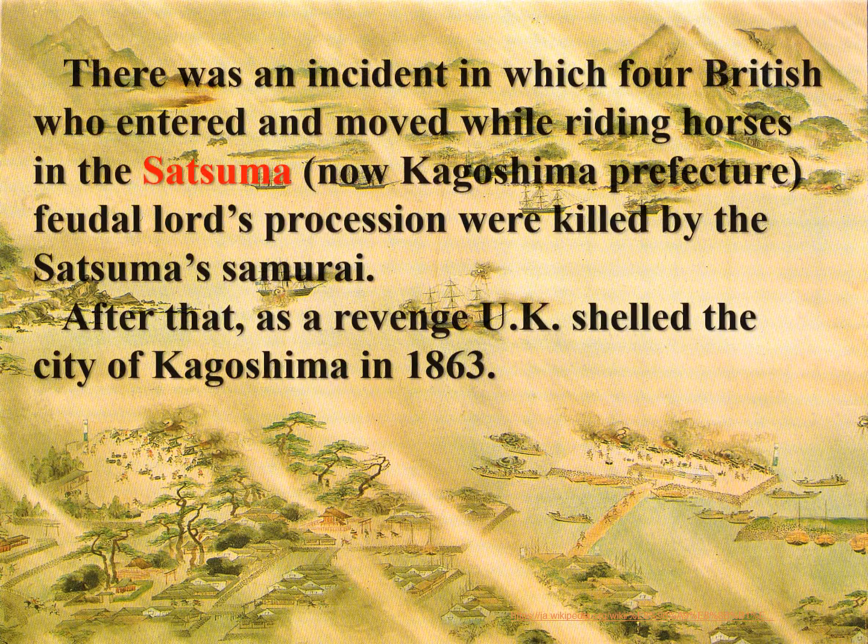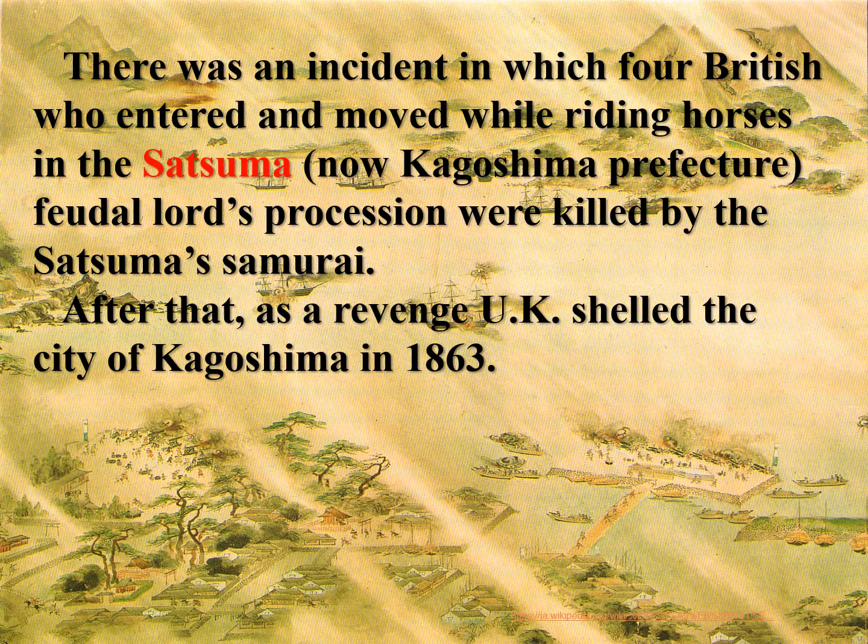There was an incident in which four British who entered and moved while riding horses in the Satsuma feudal lord's procession were killed by the Satsuma samurai. After that, as a revenge, the U.K. shelled the city of Kagoshima in 1863.